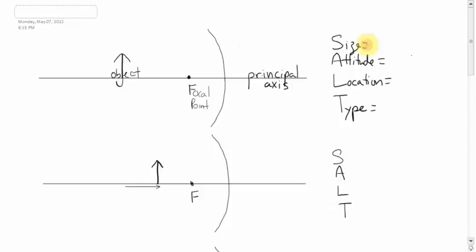There are four things to look at when you have an image. The size — is the image bigger or smaller? The attitude — is it right side up or upside down? The location — is the image behind or in front of the mirror? And the type, which you get from those two in particular. The type is either going to be real or virtual, and that depends on the attitude and the location.